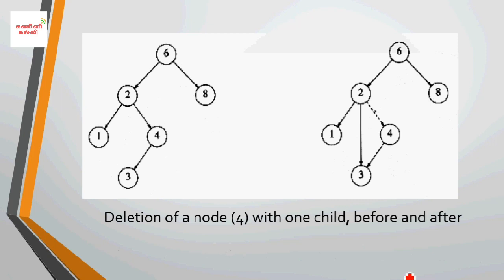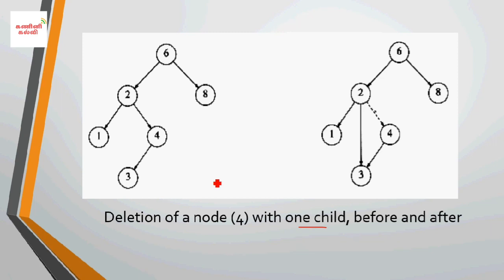Now, deletion. Deletion is where we delete a node. Deletion has cases: the node has no child (leaf), one child, or two children.